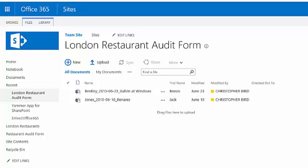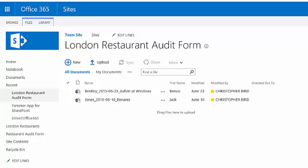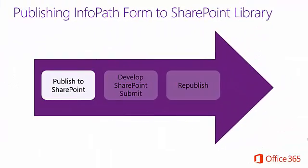Let's take a look at the slide I prepared to illustrate the publishing steps. My first step is to publish the InfoPath template to SharePoint and create the associated library. The second step is to configure the mechanism for the form fillers to submit the completed form. The third step is to republish the form — this stage updates the template stored in SharePoint, instructing SharePoint as to what to do with the form when the form filler submits the completed form.